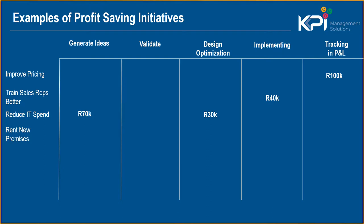Another example — rent new premises: you go and validate and sometimes your innovation kicks in and you find you can deliver more than what you thought. Improve quality of ops — a hundred thousand idea, maybe you can only validate 80,000, and so forth. So we've got a list of several projects here.